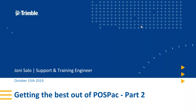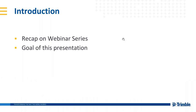Welcome everyone. The topic of today is 'Getting the Best Out of POSPAC, Part 2.' Let's start with a small recap on what we have done so far in the webinar series. We started in June — the first topic was factors which influenced the accuracy of mobile mapping. The second was done in August by Miguel about point cloud registration in TPC specifically for MX9 systems. Last month we had part one of this POSPAC series where Vincent and Carl talked about different methods of post-processing.